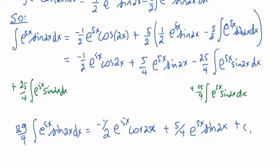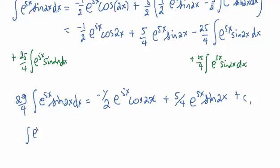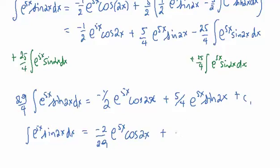I'm going to put plus C — some integration constant. Now finally, the integral of e to the power of 5x sine of 2x dx: I'm going to divide everything by multiplying by 4 over 29. So when you multiply by 4 over 29, you get minus 2 over 29 e to the power of 5x cosine of 2x, plus 5 over 29 e to the 5x sine of 2x, plus C — just another arbitrary constant. And that would be the answer.